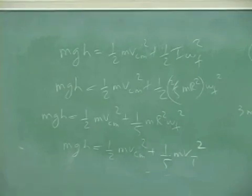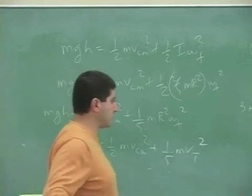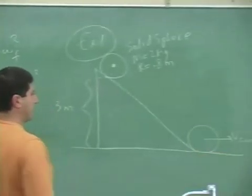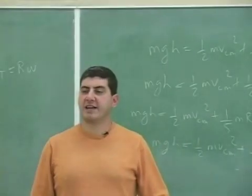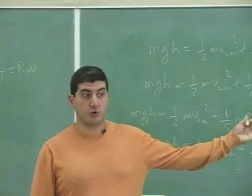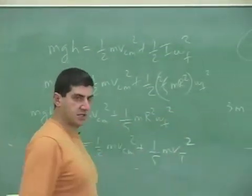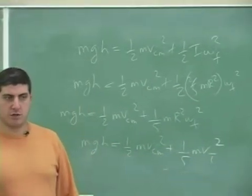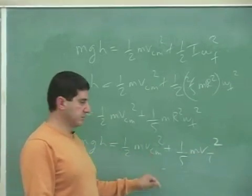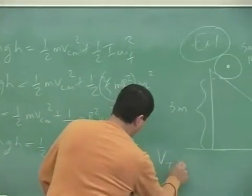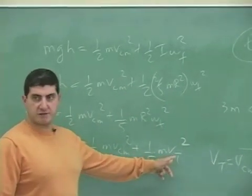How do we solve for V center of mass? Here is where we use the fact that pure rolling motion is taking place. Assuming pure rolling motion, V tangential equals V center of mass. So you can substitute V center of mass in for V tangential throughout the equation.